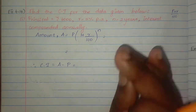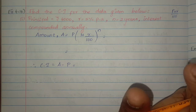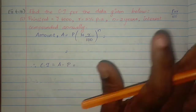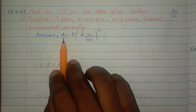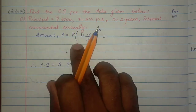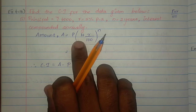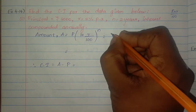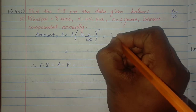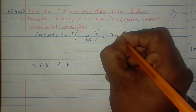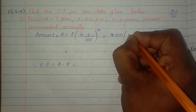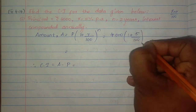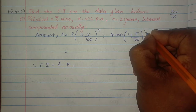We have a formula for each year. For compounding annually, the formula is A = P × (1 + R/100)^N. So it's compound interest calculated using this formula.